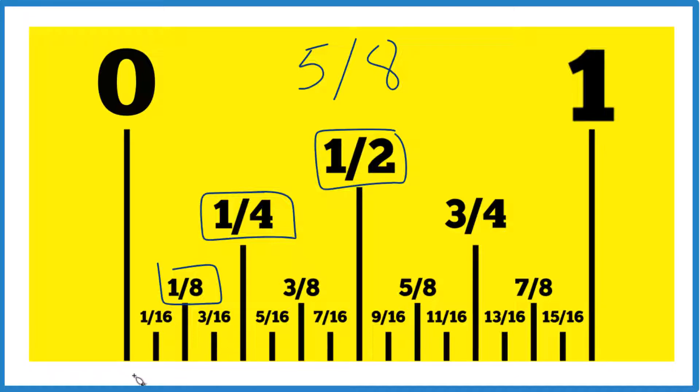And we're looking for 5 eighths. 1, 2, 3 eighths, 4 eighths. 4 eighths, that's the same as 1 half. And then 5 eighths, right here. So we can divide it up into eighths, we can pretty easily find that 5 eighths.